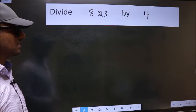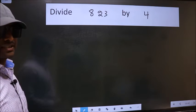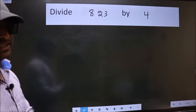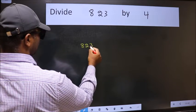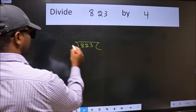Divide 823 by 4. To do this division, we should frame it in this way. 823 here and 4 here.